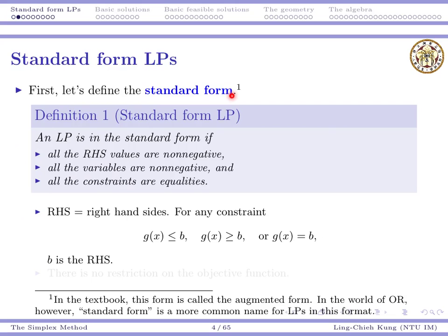In this video I will tell you what a standard form linear program is and some of its properties. An LP is in standard form if three things hold: first, the right-hand side values are non-negative; second, all variables must be non-negative; and third, all the constraints are equalities. The right-hand side refers to the constant b on the right side of each constraint operator.